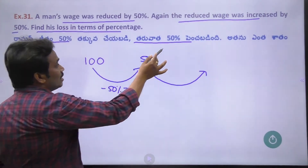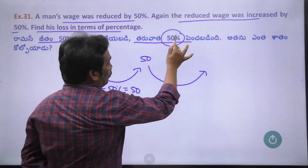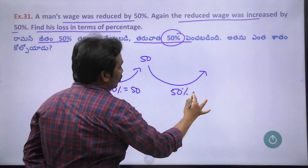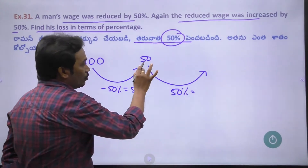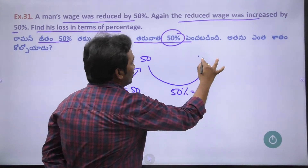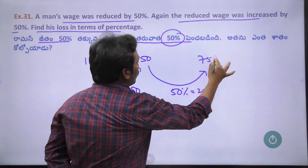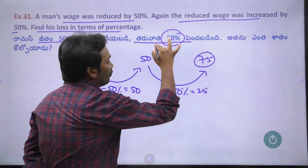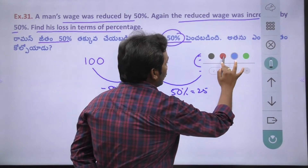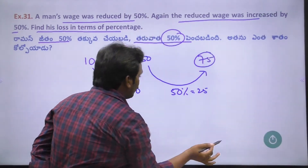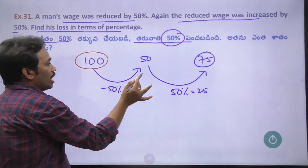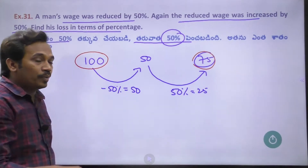Now, what is the 50% increase on 50? A 50% increase gives 25. So the present salary is 75. The original salary was 100, but the present salary is 75.